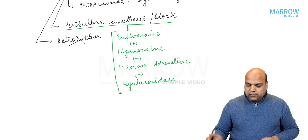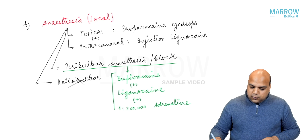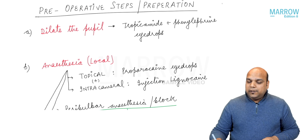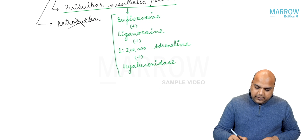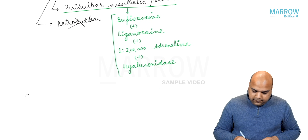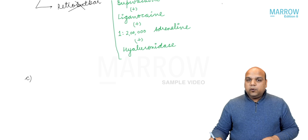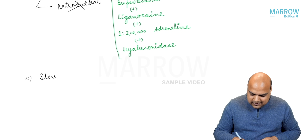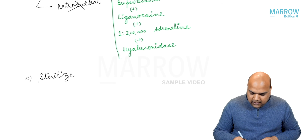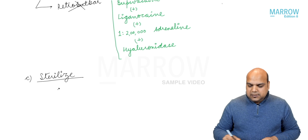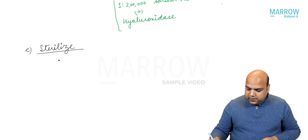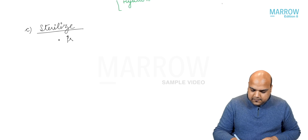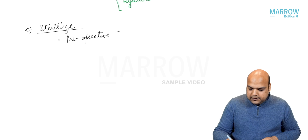So to summarize: number one, we are dilating the pupil; number two, we are giving anesthesia. Apart from anesthesia and dilatation, what else do we need to do? We need to sterilize. How are we sterilizing? Obviously we are giving pre-operative topical antibiotics.